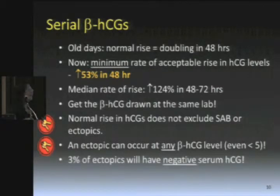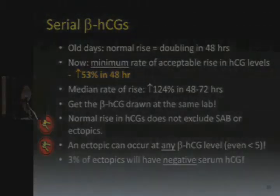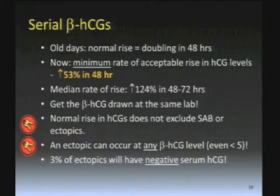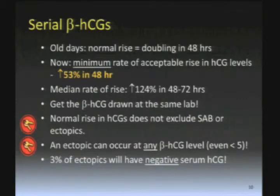If you want to really lose sleep at night, remember this: 3% of ectopics taken to the OR will actually have a negative — i.e., zero — beta HCG level. That's because you need a viable trophoblast to make beta HCG. So if the ectopic doesn't have a viable trophoblast, it's not producing beta HCG and you can't measure it. Or maybe the ectopic has actually died and ruptured, which is why you have a zero beta HCG. We actually had one of these in our department a month ago — an ectopic pregnancy with a negative serum HCG.